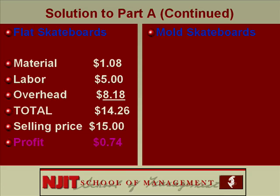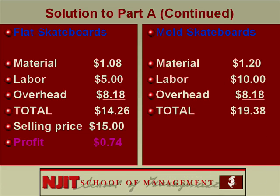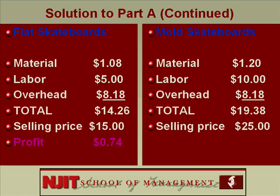For mold: material $1.20 per unit, labor $10 per skateboard, overhead $8.18 — total cost of a molded skateboard is $19.38. The selling price is $25, so the profit is $5.62. What's your conclusion? Make both skateboards. Or you could say make molded skateboard and forget flat, but the bottom line is even though the profit per unit of flat is low, they've got a huge volume — so it seems profitable to go with both.